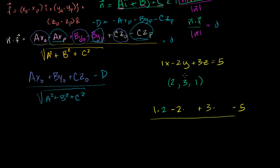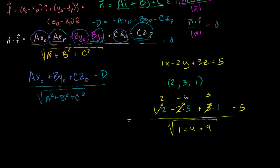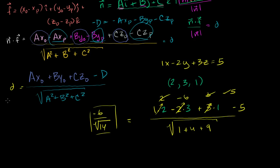So the distance equals: numerator is 2 minus 6 plus 3 minus 5. That's 2 plus 3 is 5, minus 5, so those cancel out, leaving negative 6. The denominator is the square root of 1 plus 4 plus 9, which is the square root of 14. So the distance is negative 6 over the square root of 14. Hopefully you find that useful, and we can apply this in other example problems.